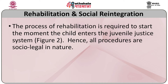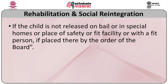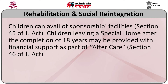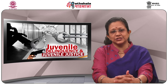The process of rehabilitation is required to start the moment the child enters the juvenile justice system — hence all procedures are social-legal in nature. For a child in conflict with law, rehabilitation and social reintegration shall be undertaken in the observation home if the child is not released on bail, or in a special home, fit facility, or with the family. Children can also avail of sponsorship facilities, and those leaving a special home after completing 18 years may be provided financial support as part of aftercare.